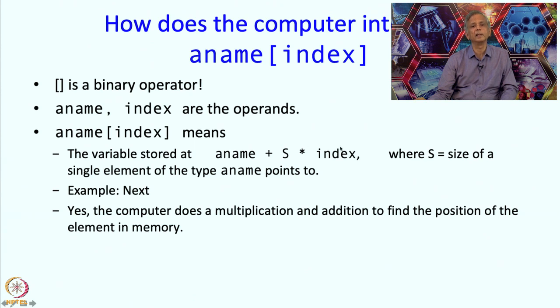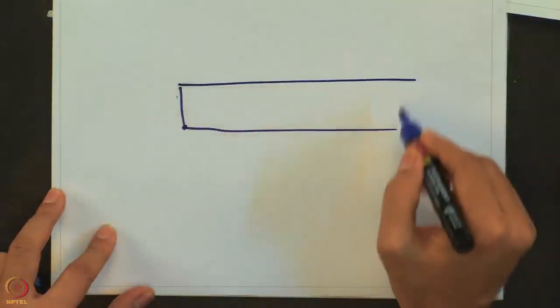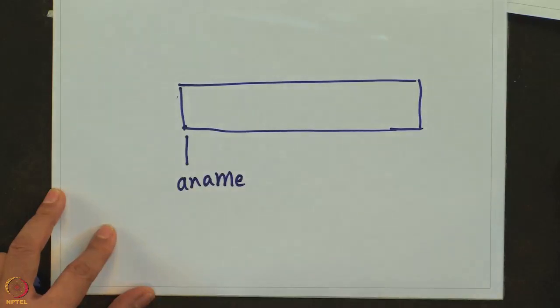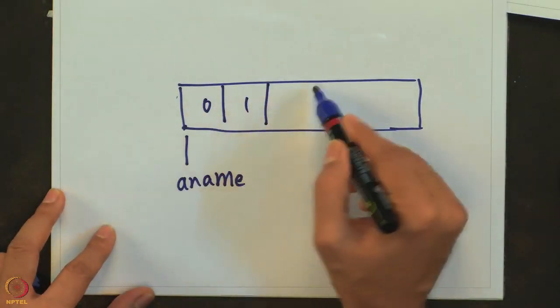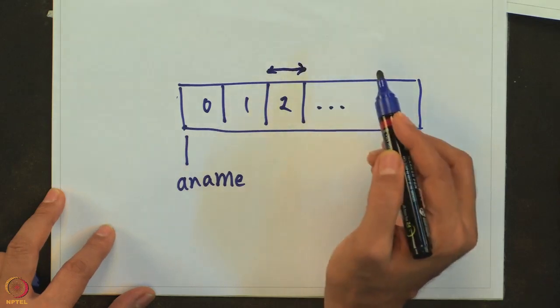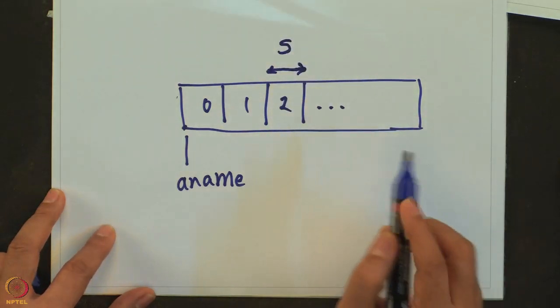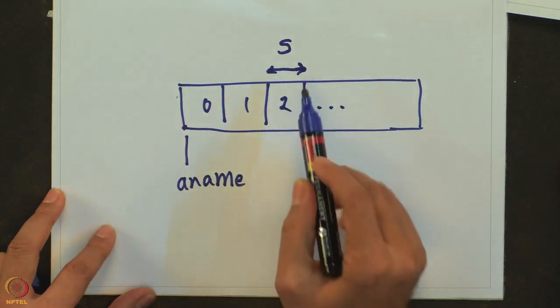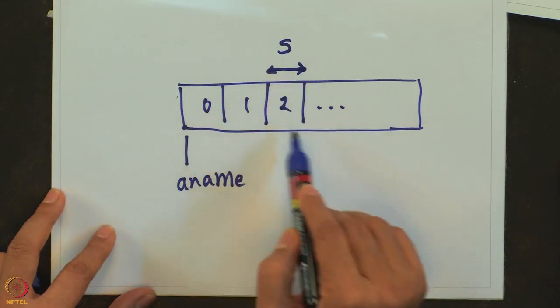So it will multiply the index by something and then add it to the name. This is not really surprising because C++ gives you a region of memory that starts at aname, then you have element 0, then element 1, element 2, and so on. This distance is the size of each element, or s. Therefore, if I want to get to the ith element, I should go forward s times whatever that index is.